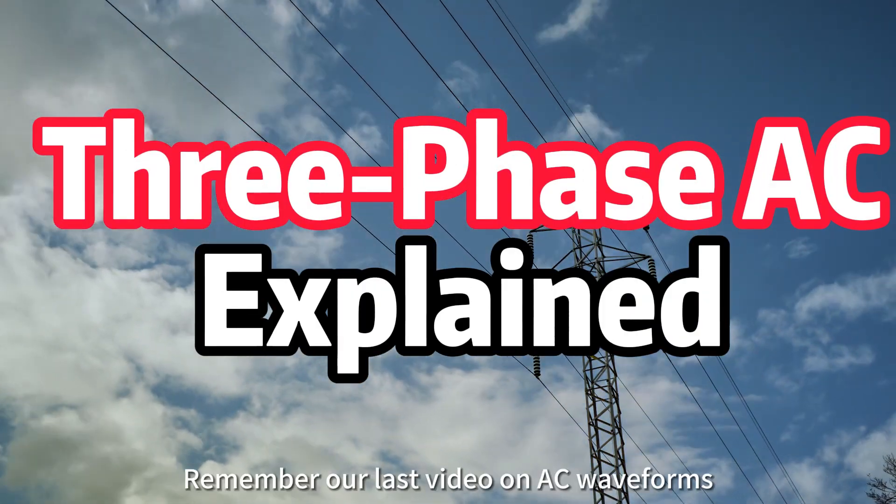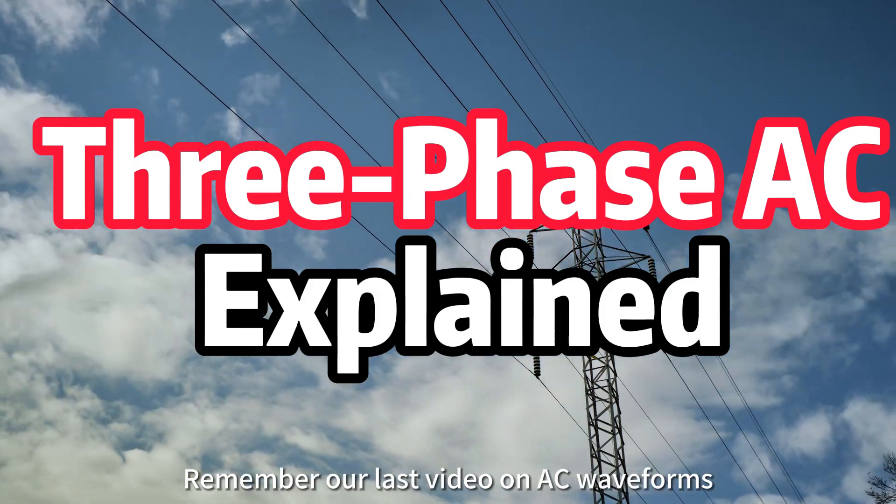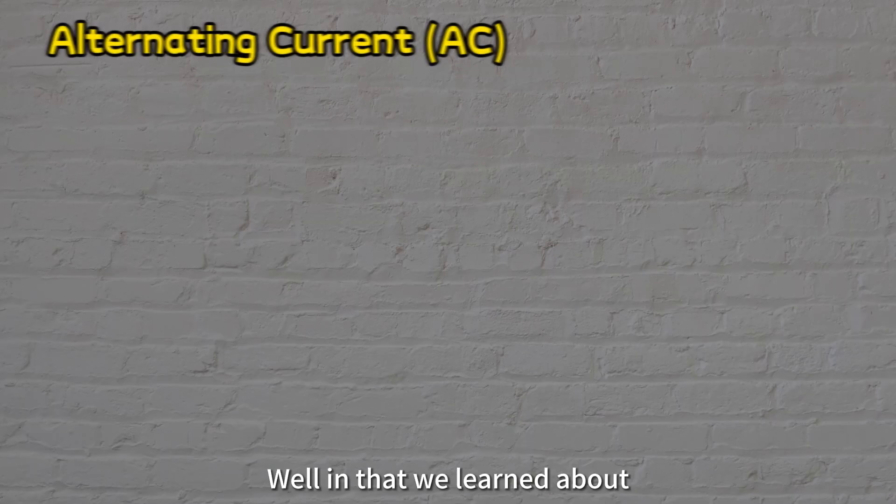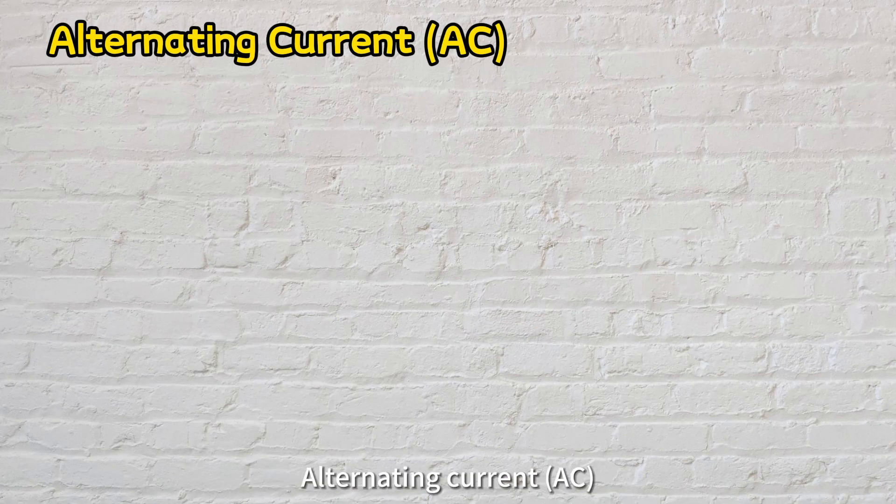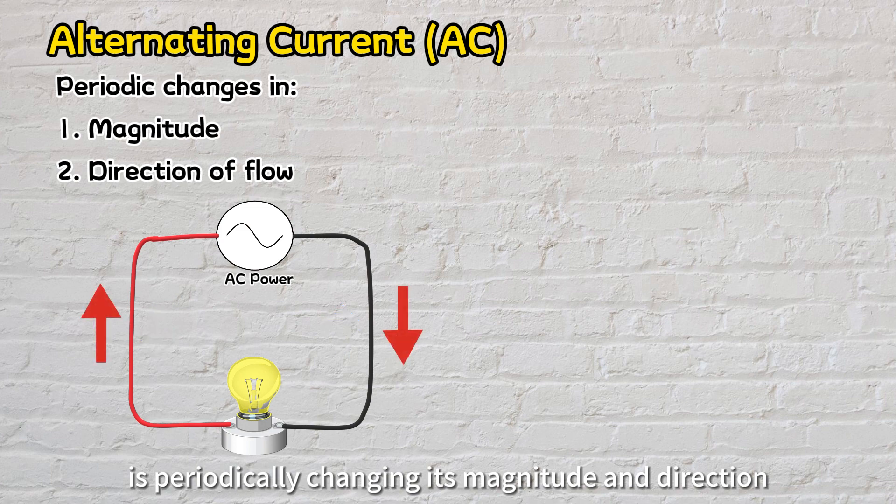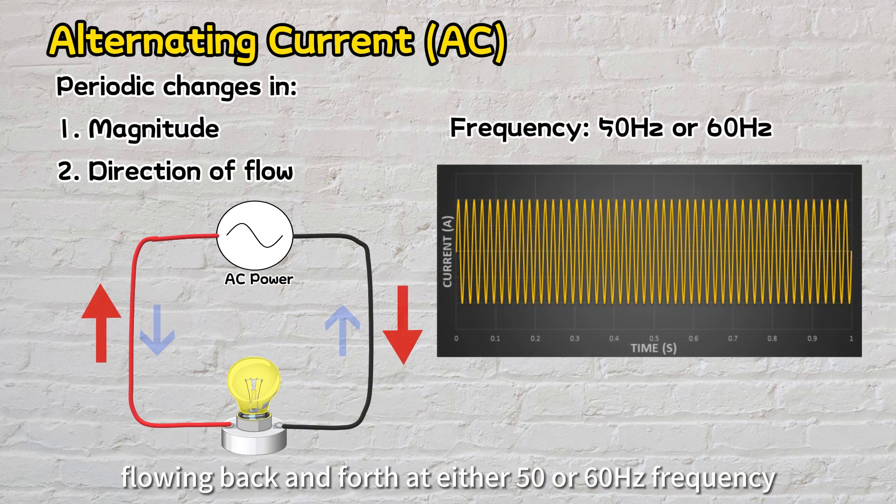Hey there! Remember our last video on AC waveforms? In that, we learned about alternating current periodically changing its magnitude and direction, flowing back and forth at either 50 or 60 Hz frequency.